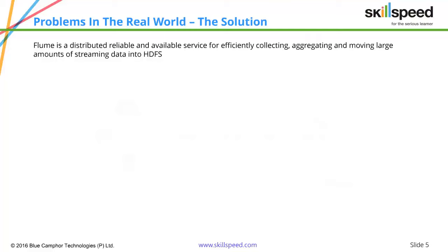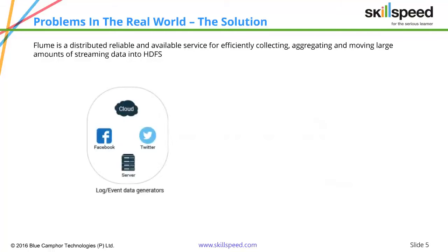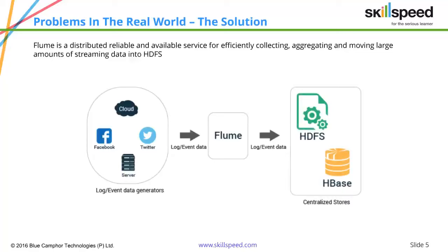Flume started as a project at Cloudera and later was taken by Apache — it is now an open source Apache project. Flume is a distributed, reliable, and available service for efficiently collecting, aggregating, and moving large amounts of streaming data into HDFS. The advantage of Flume is that it can connect to a variety of sources to pull data, as you can see from the picture. It can pull Twitter data, server logs from application and web servers, work with tools like Log4j to collect logs or syslog, connect to social media streams, collect raw text files, and even connect to a spool directory. Whatever your use case, Flume has a solution to collect the data, aggregate it, and put it inside your HDFS or HBase.